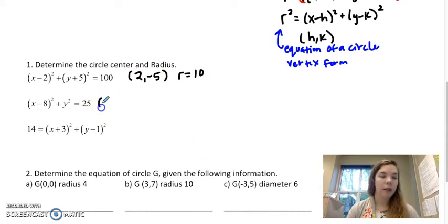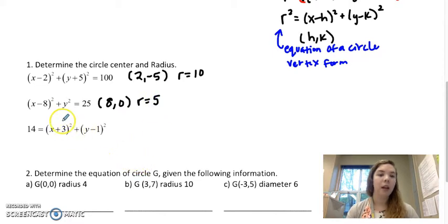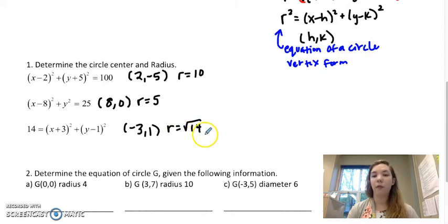Here the center would be positive 8 and then 0 because y isn't adding or subtracting anything, and then the square root of 25 is 5. Here my center is negative 3, positive 1, and my radius is the square root of 14. I'm just going to leave it that way in exact form. I don't believe it simplifies any further.